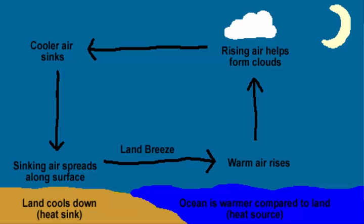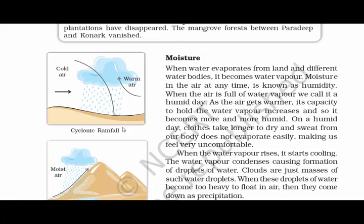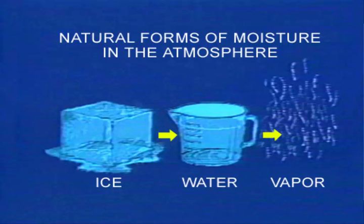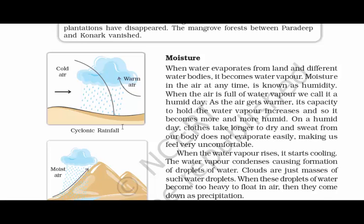Coming to the next topic — moisture. Moisture is the amount of water vapor present in air. The more moisture in the air, the more humidity it creates. When the air is full of water vapor, we call it a humid day. As the air gets warmer, its capacity to hold water vapor increases, making it more and more humid. On a humid day, clothes take longer to dry and sweat from our body does not evaporate easily, making us feel very uncomfortable.